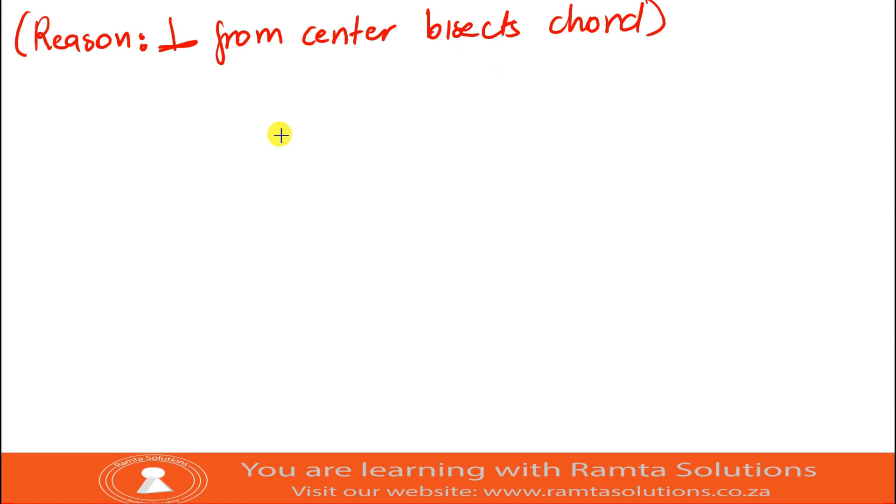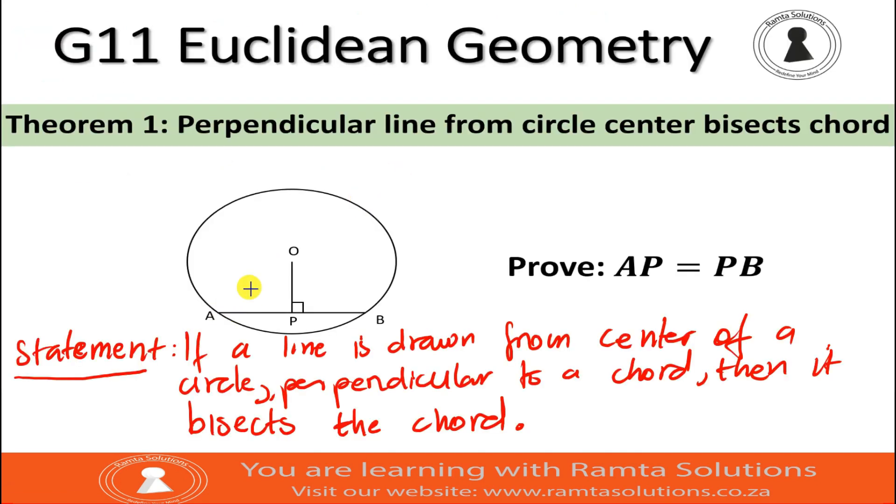So, what we need to do now for our proof, we need to prove that AP is equal to PB. First thing first, we draw OA and OB. Let's go to the diagram. This is O, so OA must be a line joining these two. So, it will be OA and then OB.